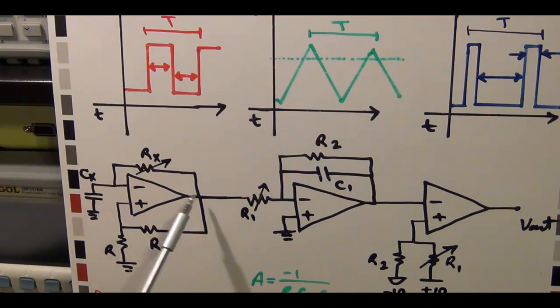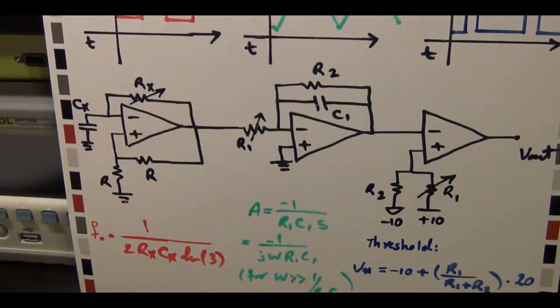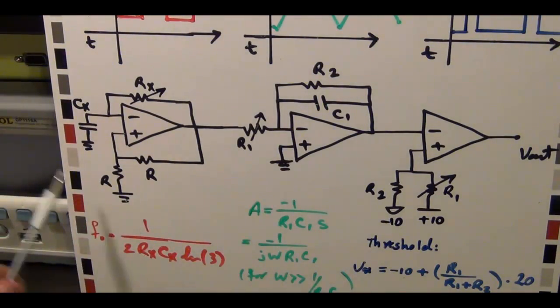So this guy goes high, this guy starts to charge, this voltage goes above this voltage, this voltage goes above this, the output switches to the negative value, this goes, stays negative, this starts to discharge, and then this cycle repeats. And you can actually calculate the exact frequency of oscillation with this architecture.